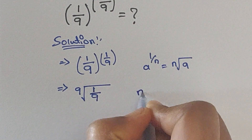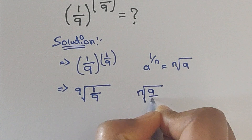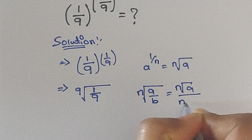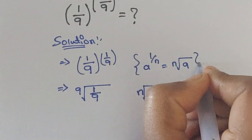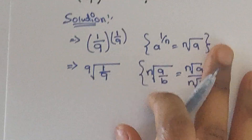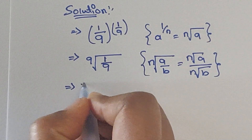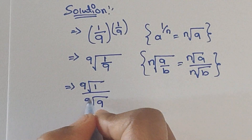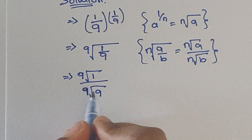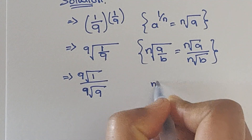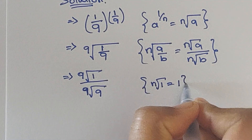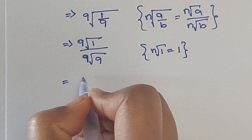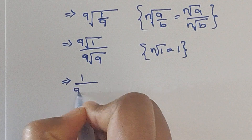Now we use the law: n-th root of a/b equals n-th root of a divided by n-th root of b. So here we can write 9th root of 1 divided by 9th root of 9. And since n-th root of 1 equals 1, we get 1 divided by 9th root of 9.